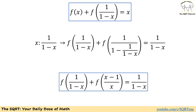To solve this problem, let's start with what we have: f(x) + f(1/(1-x)) = x. Now because we already have f(x) and f(1/(1-x)), we need to find an expression for f((x-1)/x). Because of that, we are going to change x to 1/(1-x) to see what we can get.